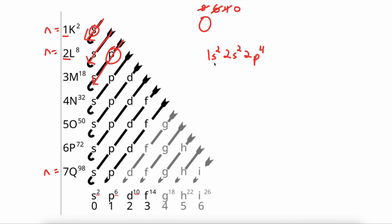This, 1S2, 2S2, 2P4, is the electron configuration for oxygen.